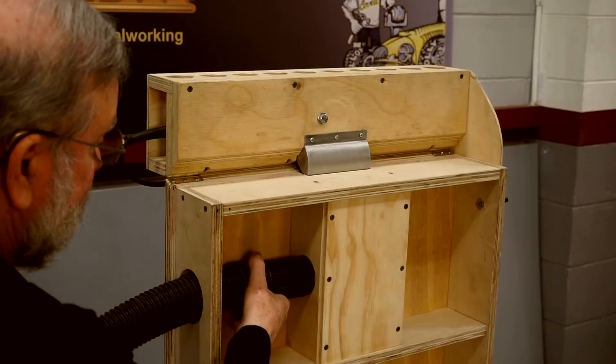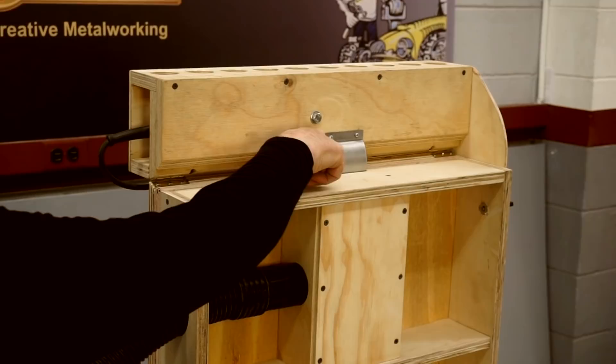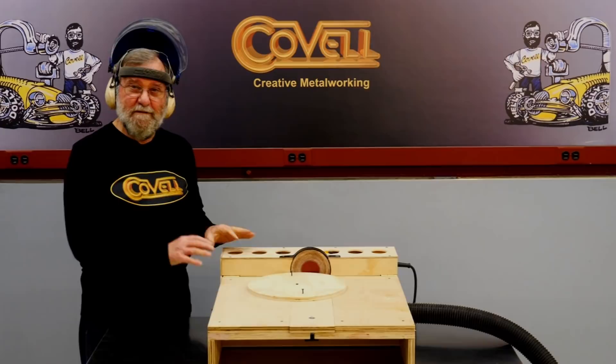I cut a hole in the side of the base so I can feed in the vacuum hose, and it can connect to the hole in the plenum. And again, I have a nice snug fit between the scoop I made and the opening in the base.